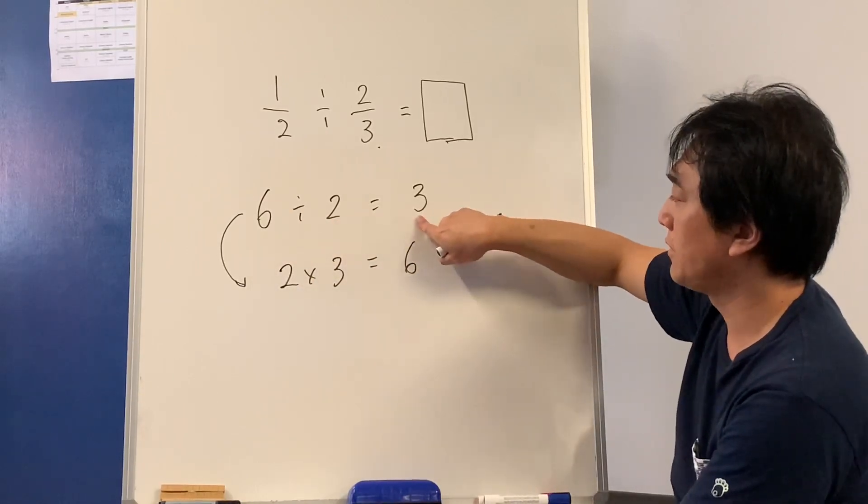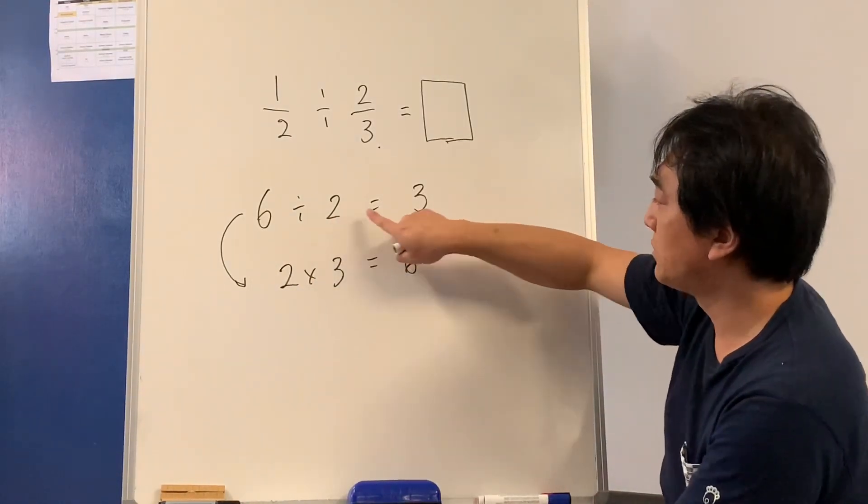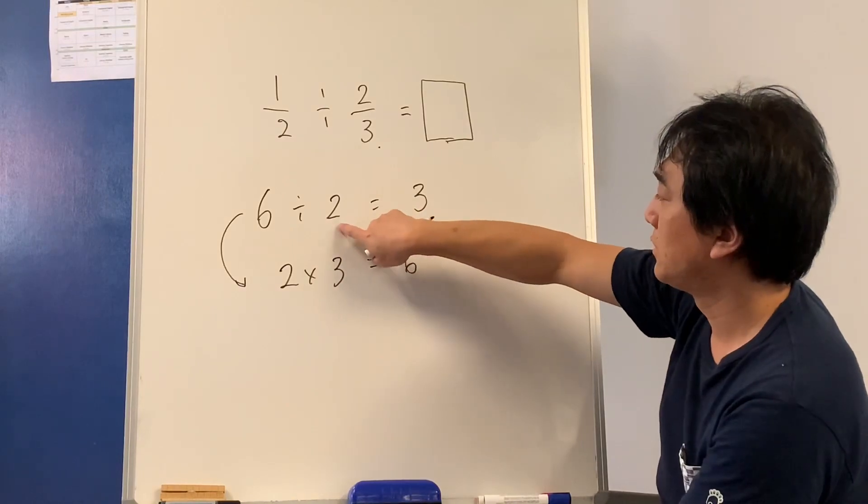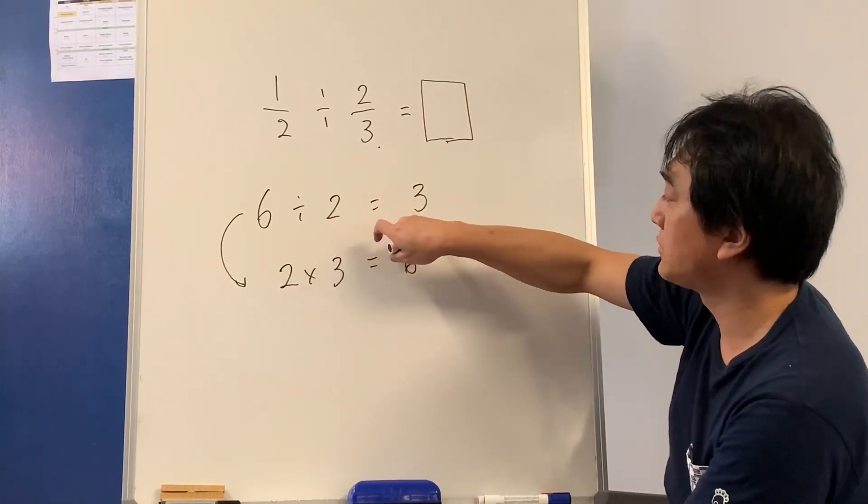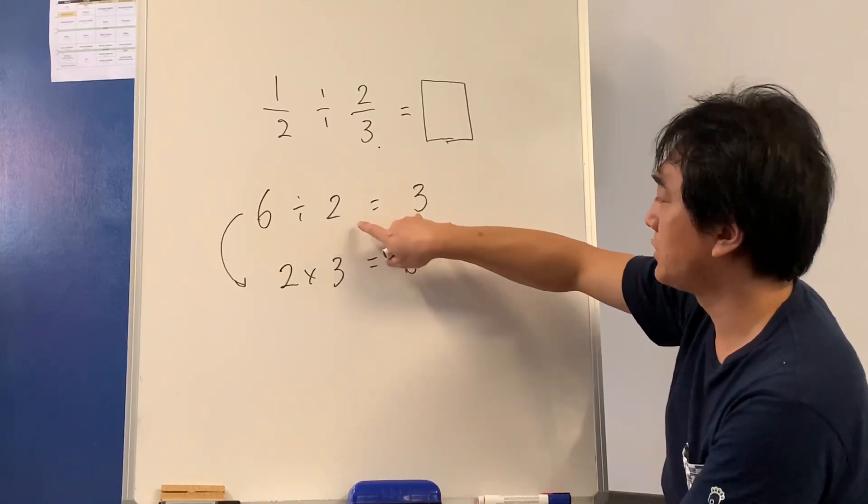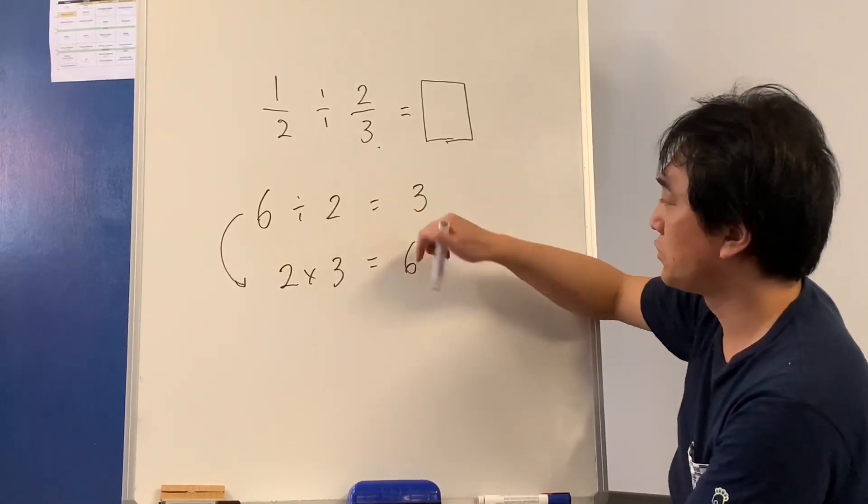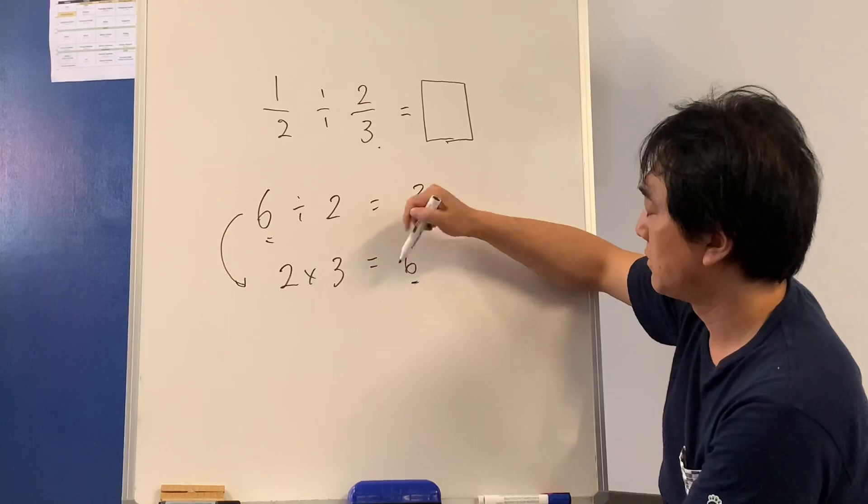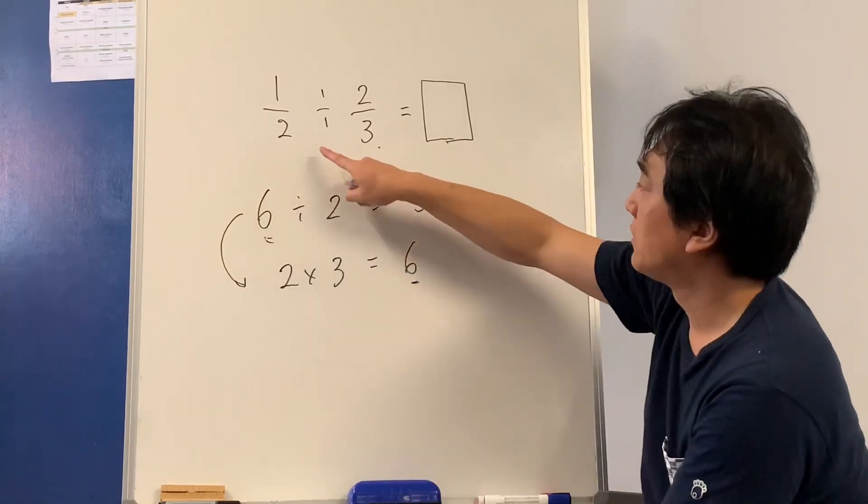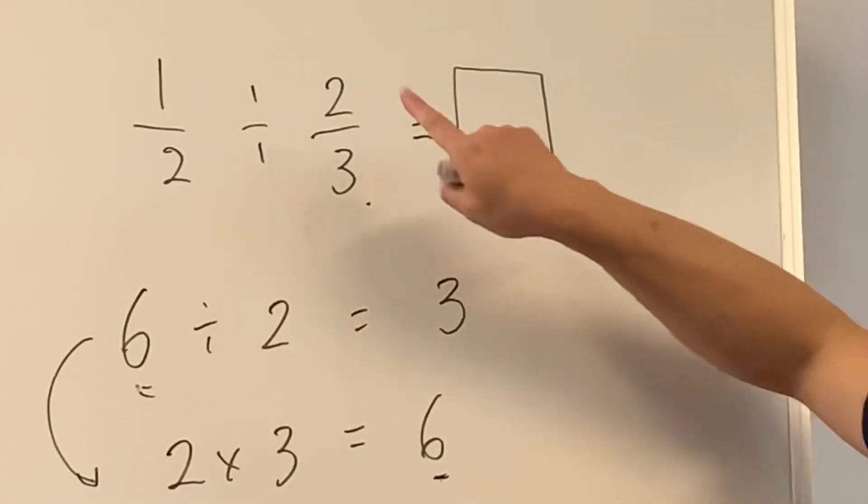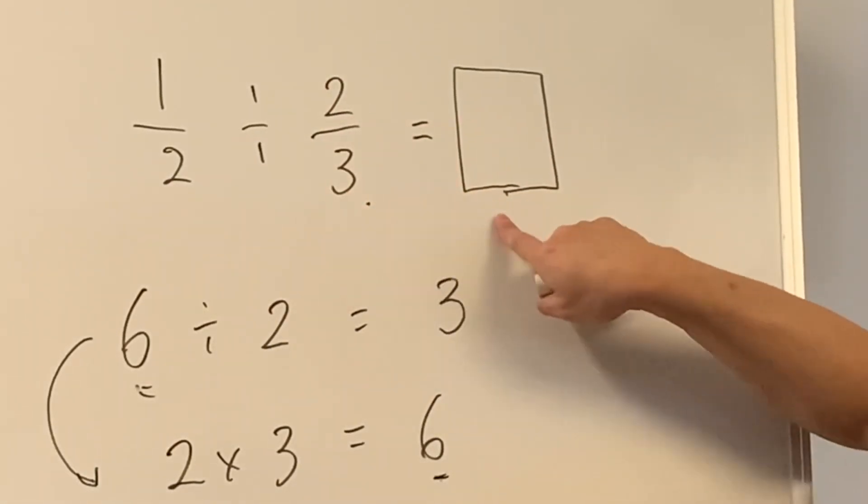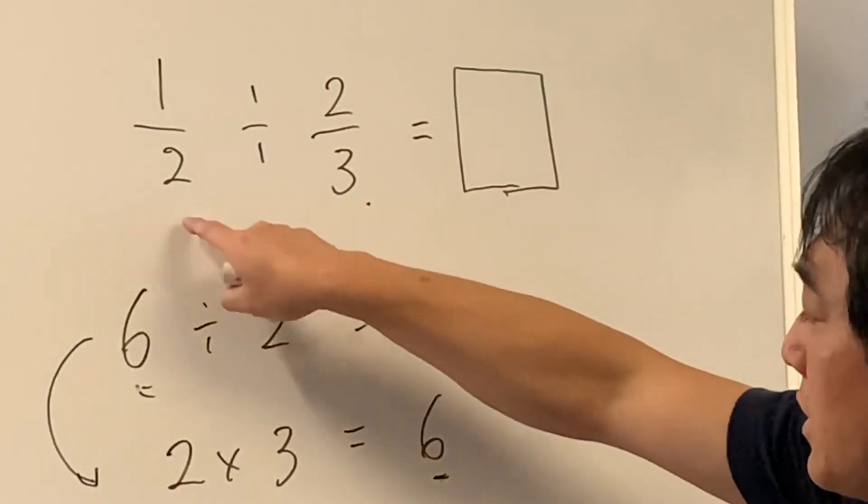So six divided by two equals three. If we multiply these two numbers - the number that divides the first number and the answer - if we multiply these two numbers, the answer should be the first number. If I multiply this number and the answer, the result is going to be half.